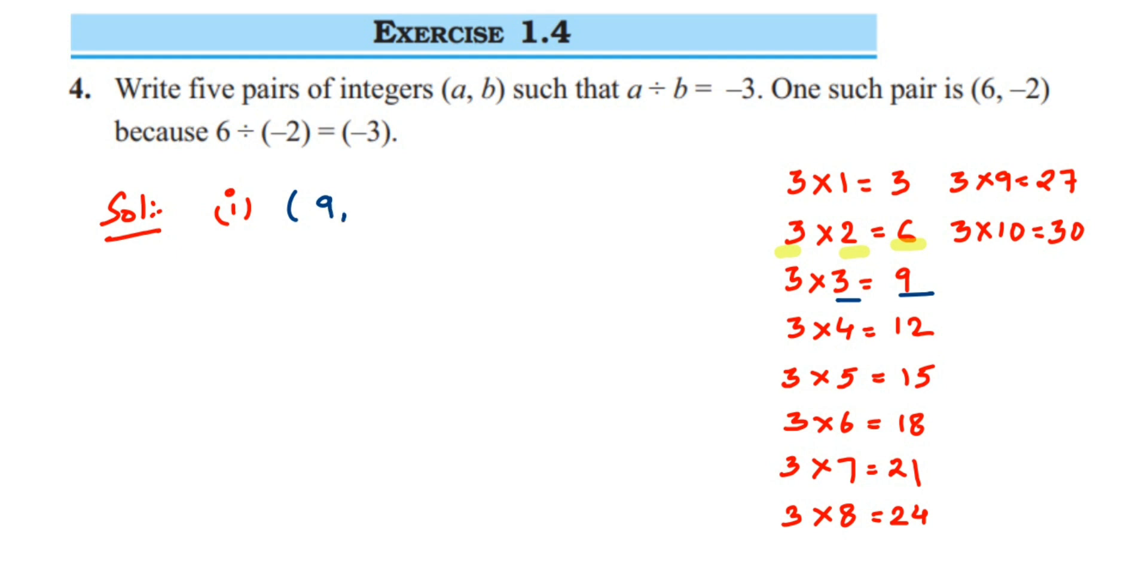So you can take 9 and -3, because 9 divided by -3 will give you -3. There's one negative sign, so in the final answer you're going to get a negative sign.